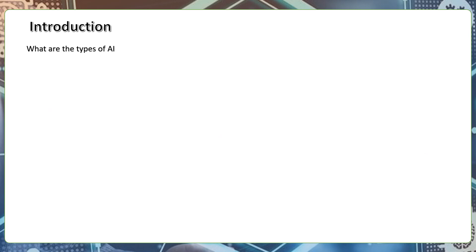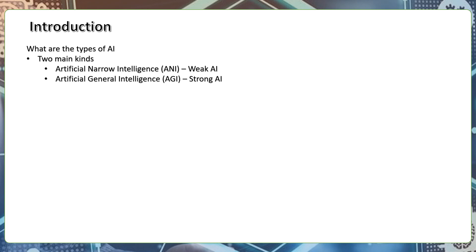The first thing about AI training is Artificial Narrow Intelligence, and then Artificial General Intelligence. ANI handles specific narrow tasks, while AGI represents a strong, general cognitive ability.